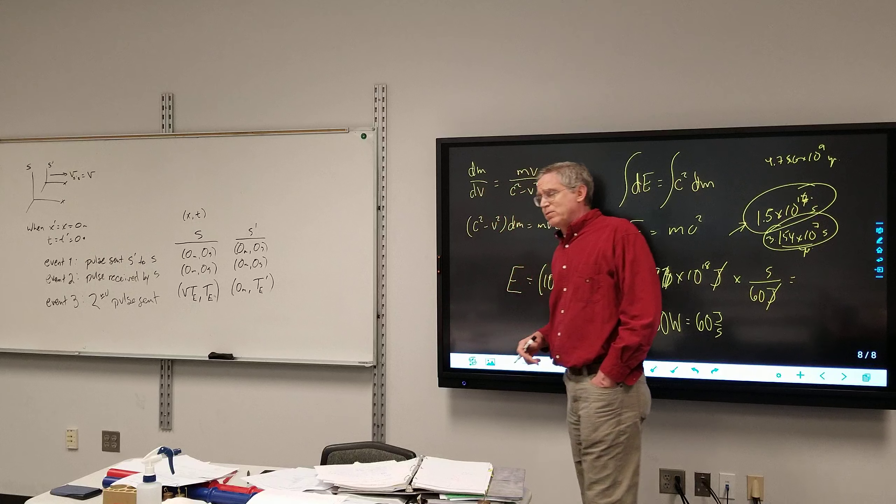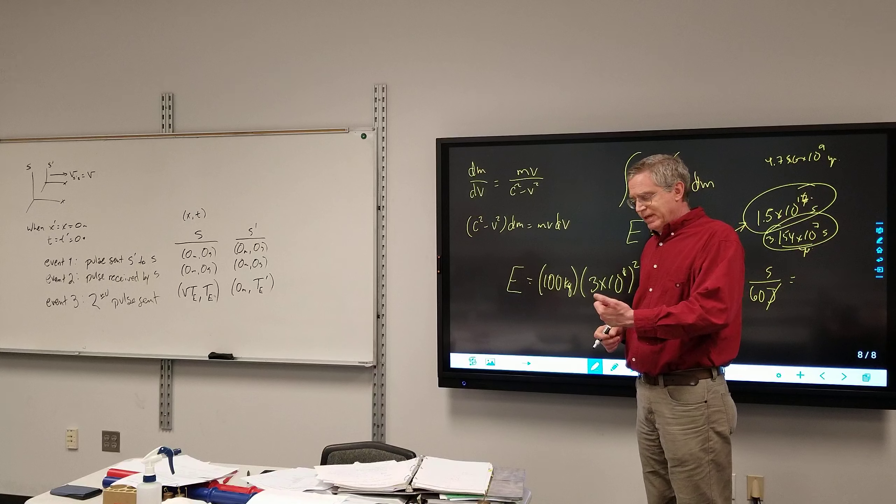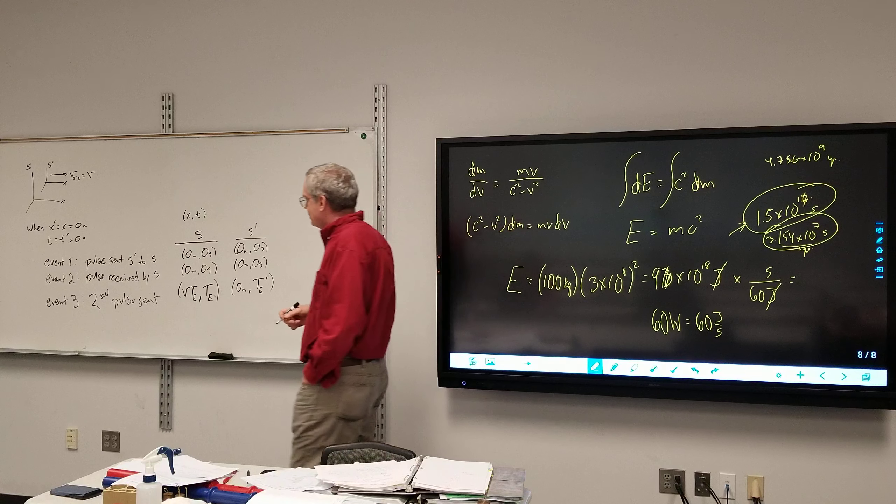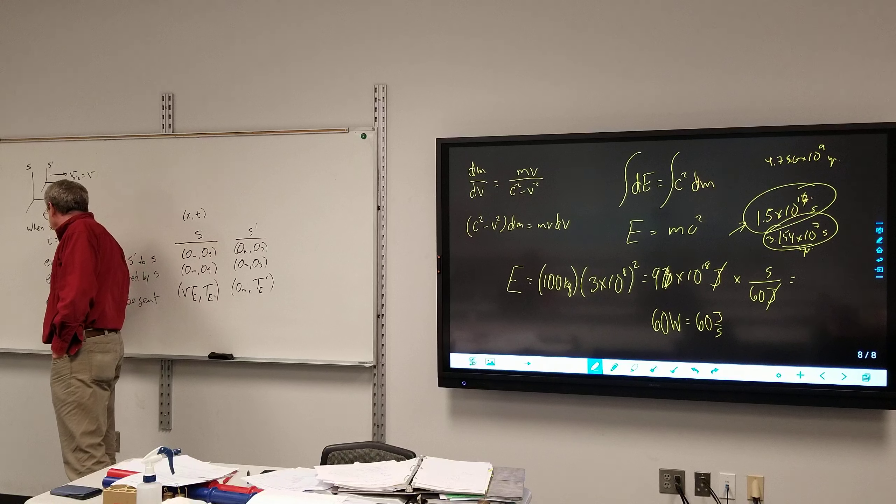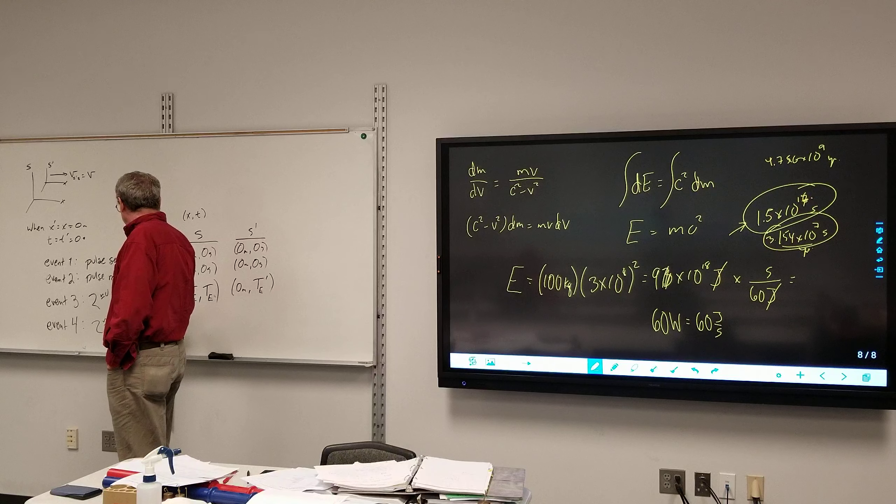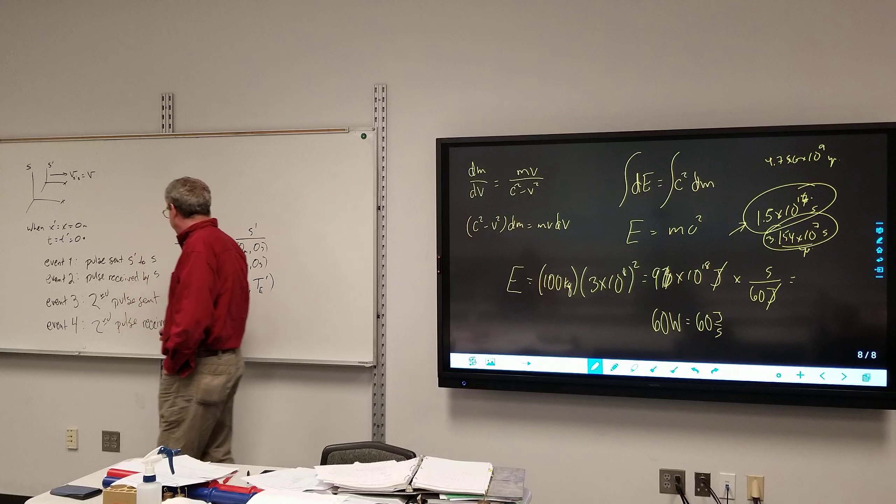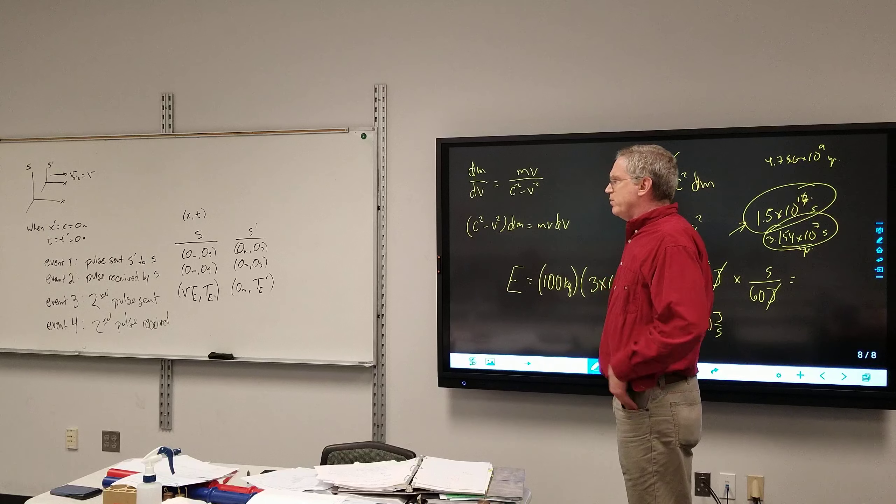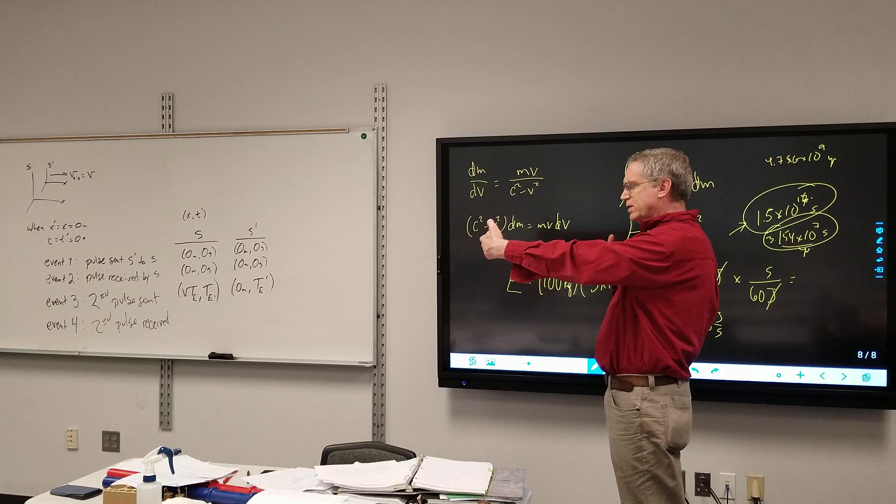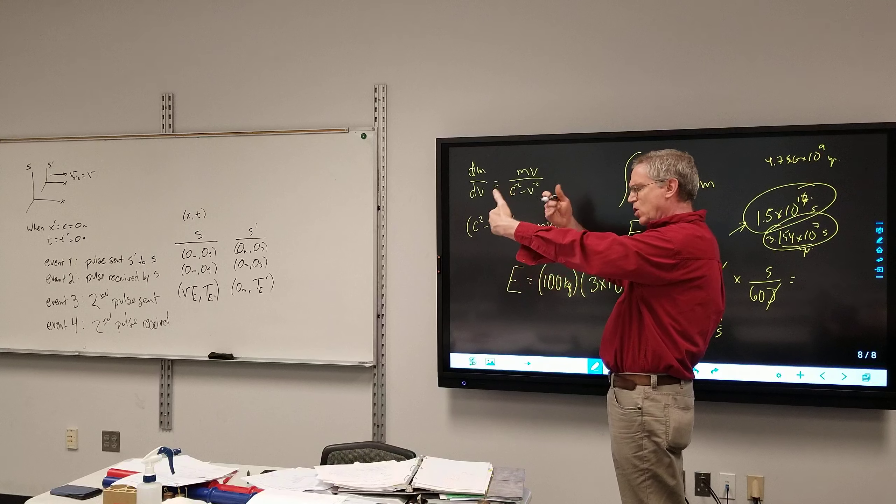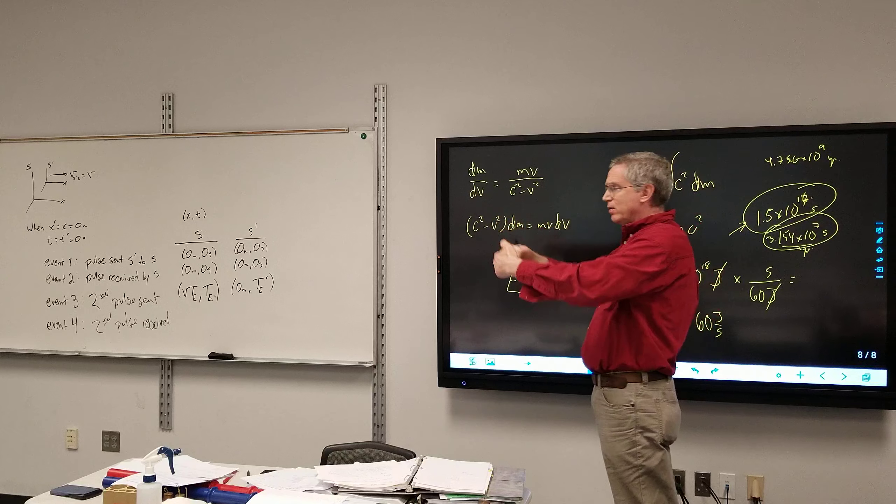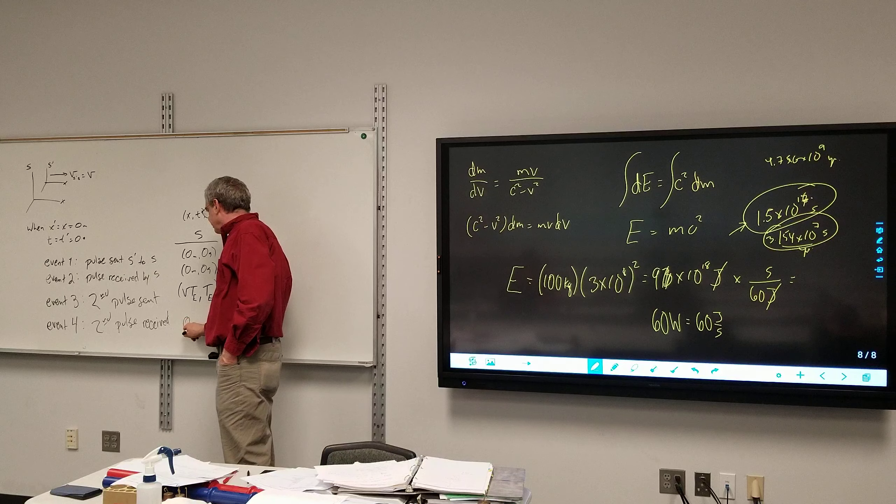And then, event four, the second pulse is received. So, from Earth's point of view, or S's point of view, this rocket ship has been moving out. They know the time in which it sends out the second pulse, and then it knows, well, it knows that whatever signal is sent by S prime, it takes time to get back to Earth. So, it's going to receive it at zero meters, because...